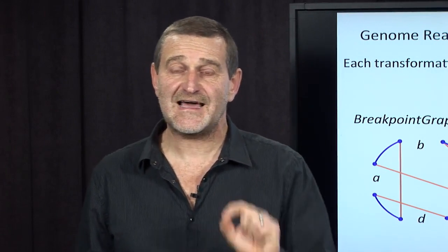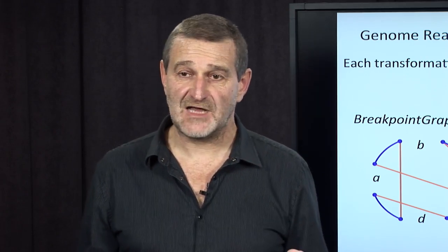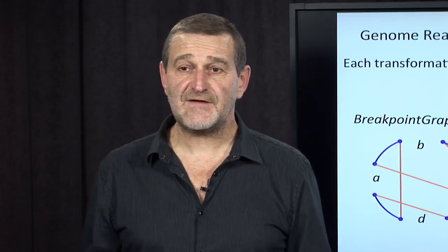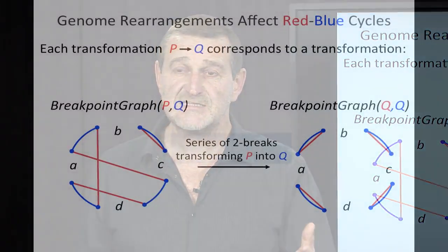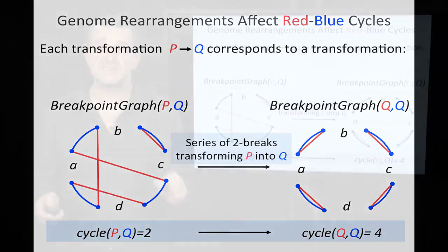And we know how it looks like. It looks like the identity breakpoint graph with the maximum number of cycles. And we will explore this fact. Despite the fact that the series of two breaks transforming P into Q is unknown, we know that the number of cycles between P and Q, in this case 2, must change into the maximum number of cycles between P and Q, which in this case is 4.